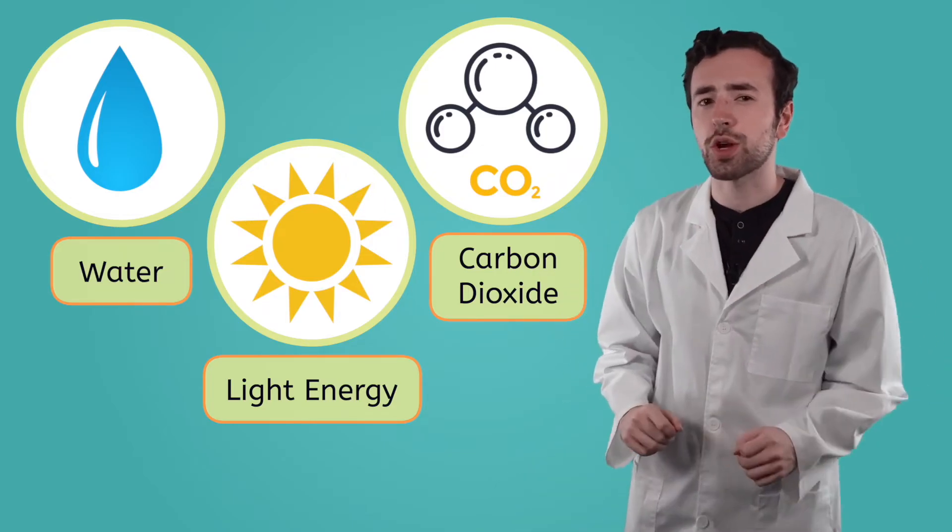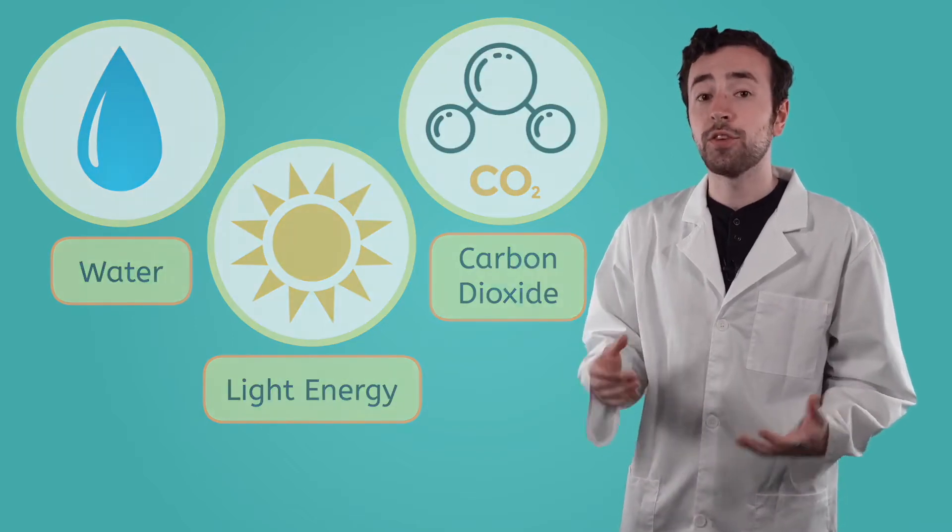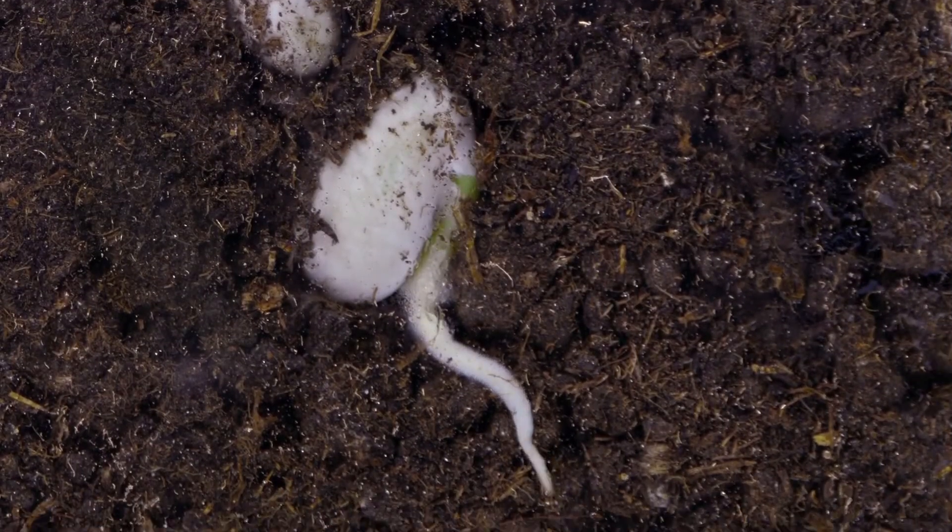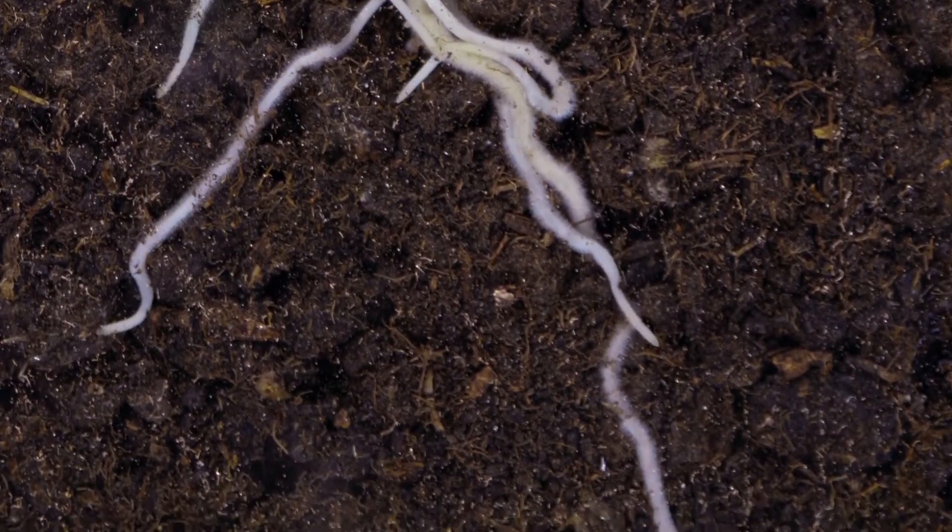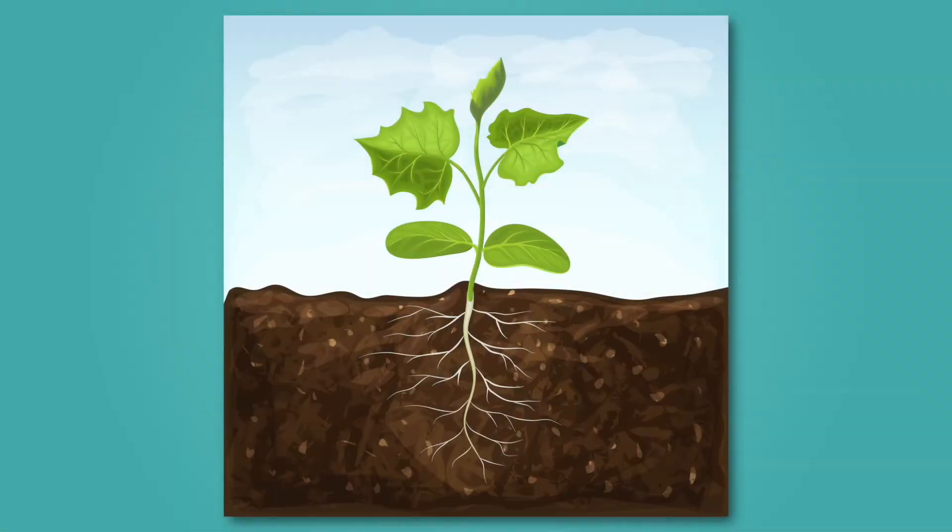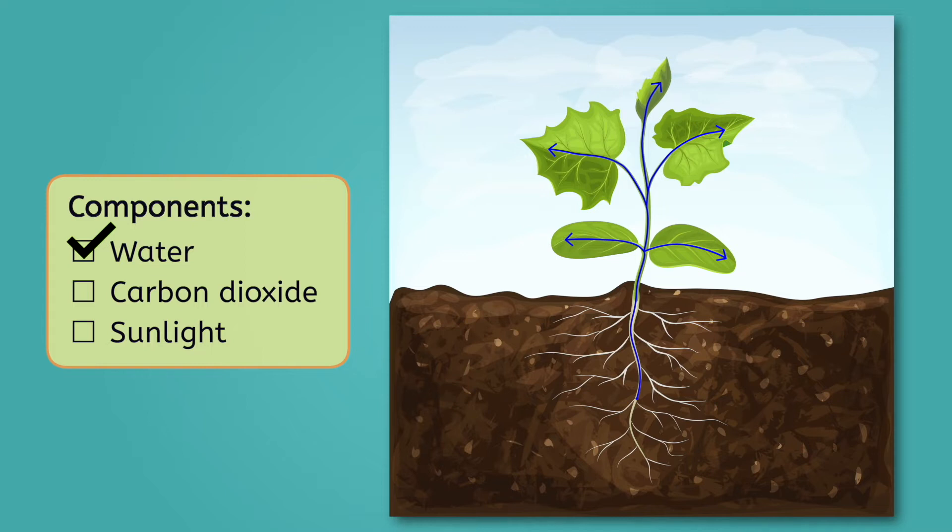Plants have specialized structures for collecting everything they need for photosynthesis. The first component plants need is water. But how do they get that water from the environment to where it needs to be for photosynthesis? Roots. Plants have intricate systems of roots, designed to spread out in the soil to soak up all the water plants need. The water is transported up from the roots through the stems and to the leaves of the plant. The plant has water, its first component.